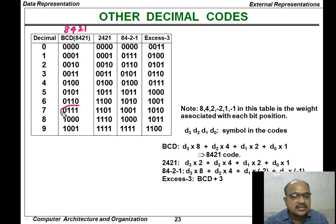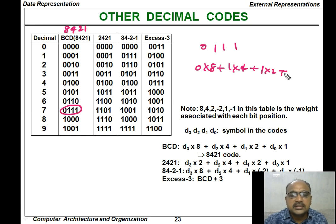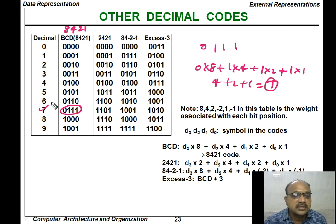For example, if you consider the number 0111, the value is 0 into 8 plus 1 into 4 plus 1 into 2 plus 1 into 1, giving us 4 plus 2 plus 1, which is the decimal value 7. That is why it is called the 8421 code.